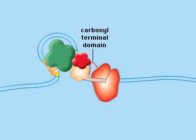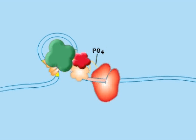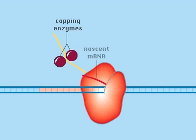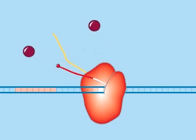When transcription begins, the carboxyl terminal domain of Pol II becomes heavily phosphorylated. The 5' end of the growing RNA is protected from 5' exonucleases by a cap of 7-methyl G.